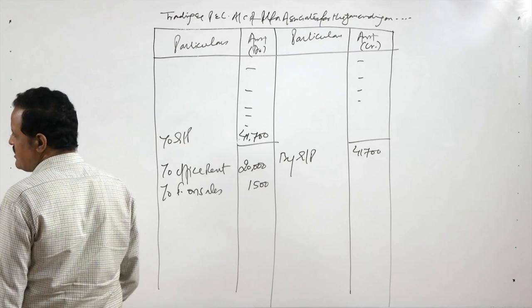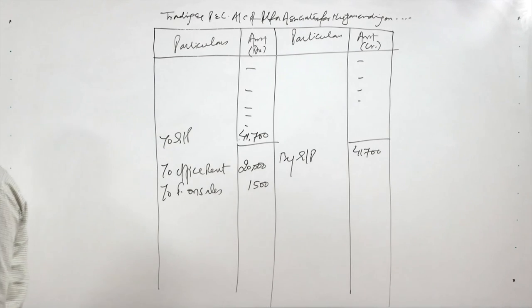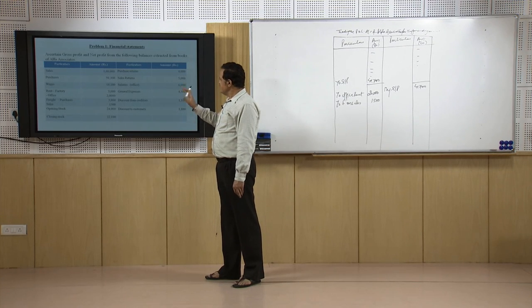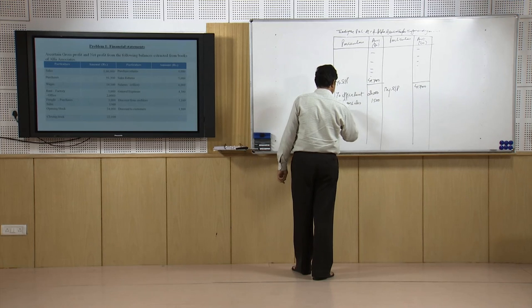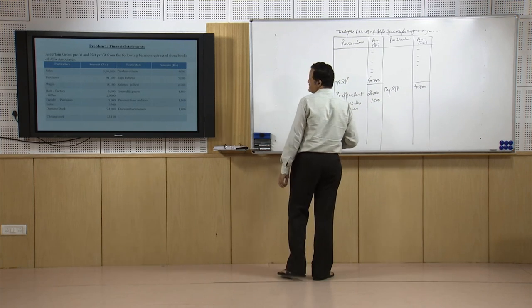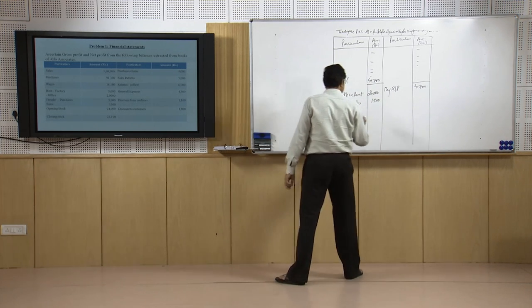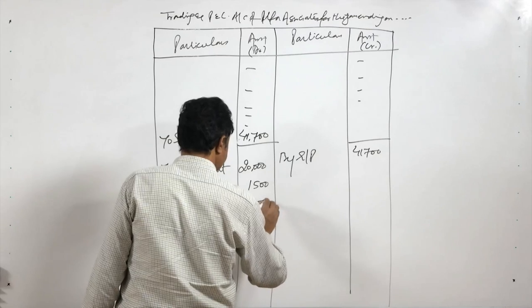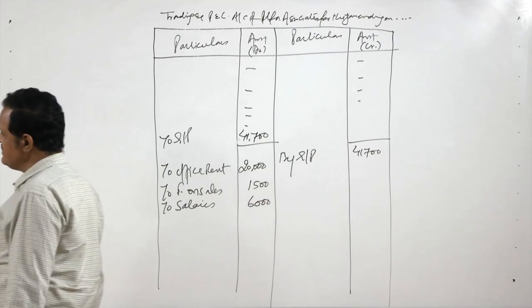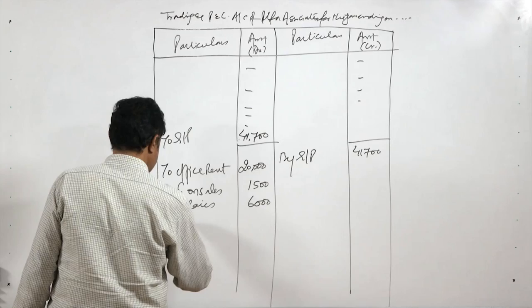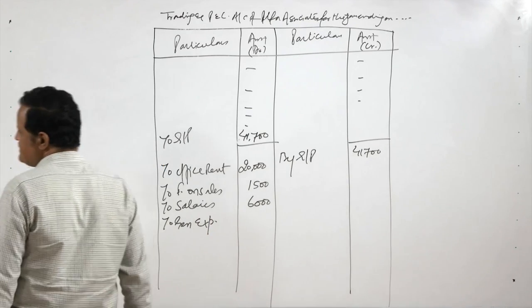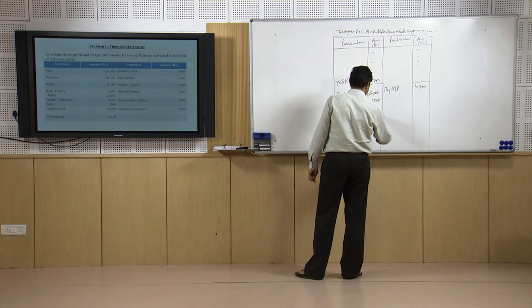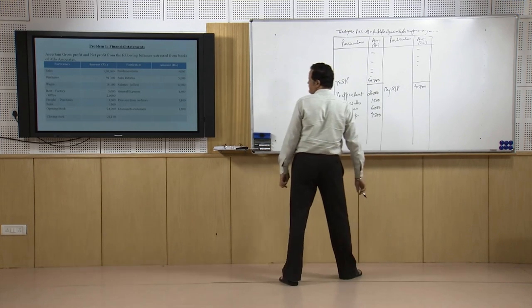Opening stock and closing stock are already done. Purchase returns and sale returns are already factored in. Salaries are an indirect expense — 6,000 rupees. Then we have general expenses, also an indirect expense — 4,500 rupees.